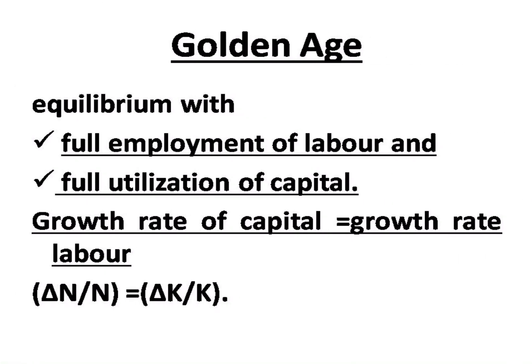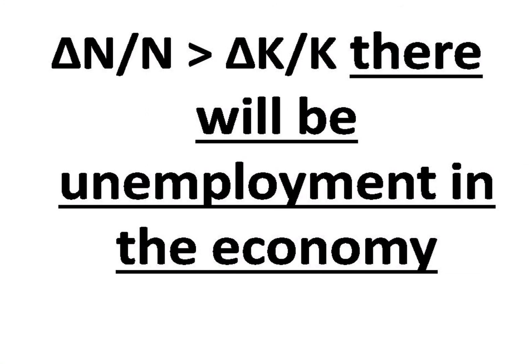The golden age equilibrium occurs when there is full employment of labour and full utilization of capital. This means the growth rate of capital (ΔK/K) is equal to the growth rate of labour (ΔN/N). If the population growth rate is higher than the capital growth rate, there is unemployment in the economy.